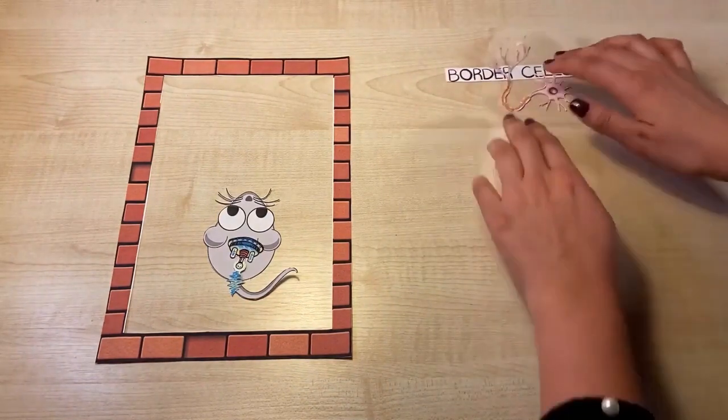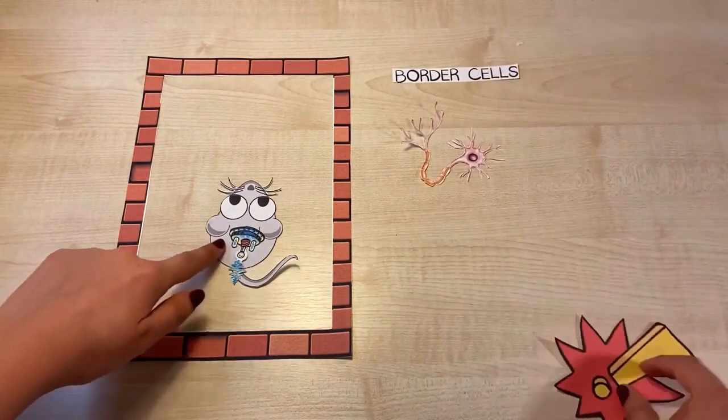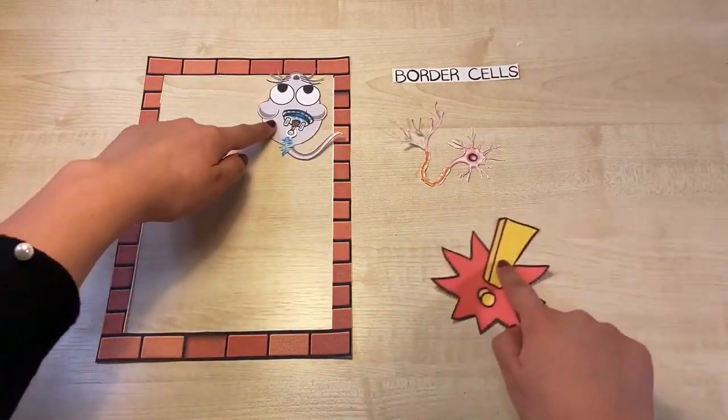The last type of neurons are border cells. Border cells only fire when the animal is located next to the border of a room or environment.